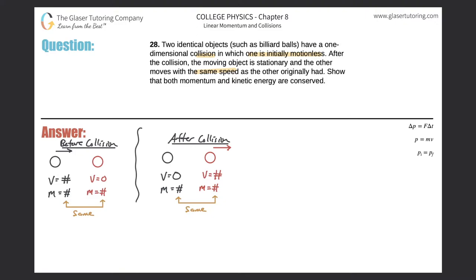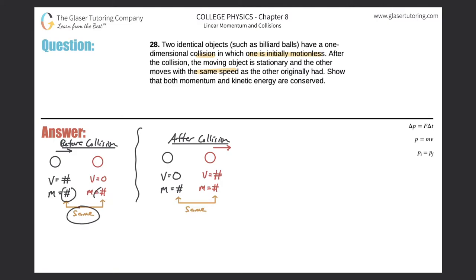For this problem, let's take a look at the picture. We have conditions before the collision. I chose the black ball to be moving to the right — it has a certain velocity and a certain mass. The red ball is motionless, so its velocity is zero, but it still has some mass. The masses of the two are going to be the same because they are identical objects.